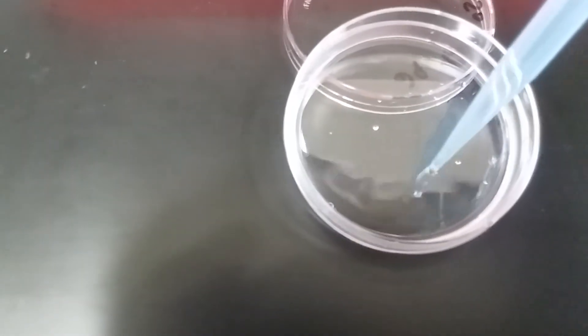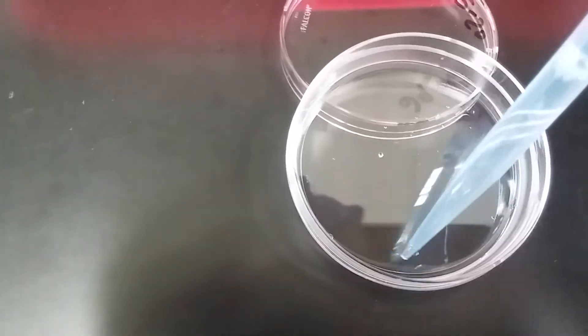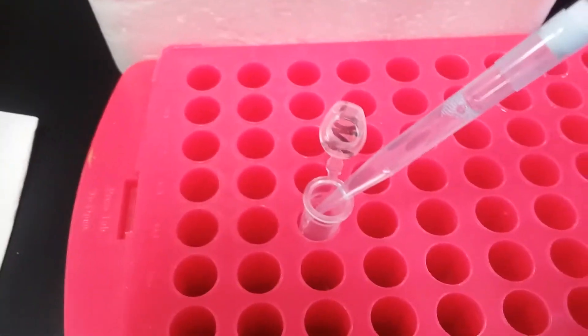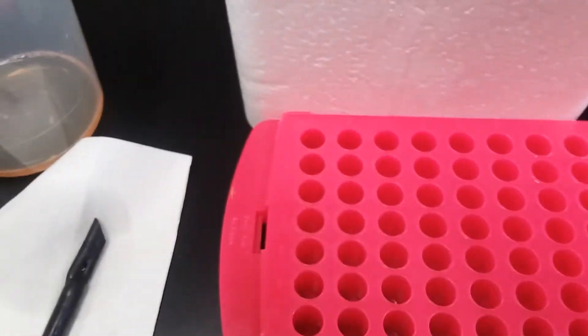Sometimes it's super gummy, and this helps break up that gumminess, and I will deposit that whole cell lysate into my tube, close it up, and put it on ice. Very important to put it on ice.